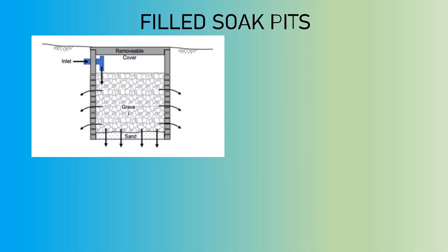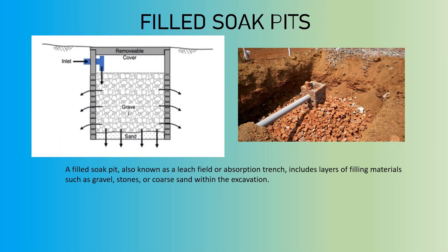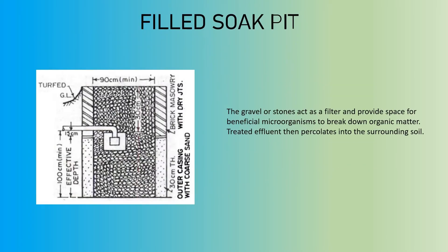A filled soak pit, also known as a leach field or absorption trench, includes layers of filling materials such as gravel, stones, or coarse sand within the excavation. Wastewater flows into the filled soak pit where it encounters the filling material, which provides additional surface area for the wastewater to interact with and facilitates better distribution of the effluent. As the wastewater moves through the layers of filling material, it is treated through physical and biological processes. The gravel or stones act as a filter and provide space for beneficial microorganisms to break down organic matter. Treated effluent then percolates into the surrounding soil.